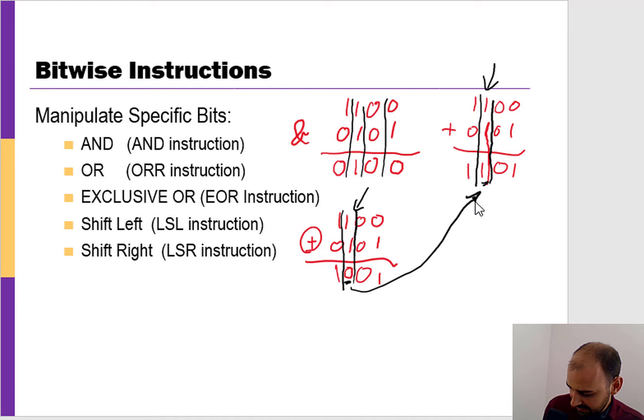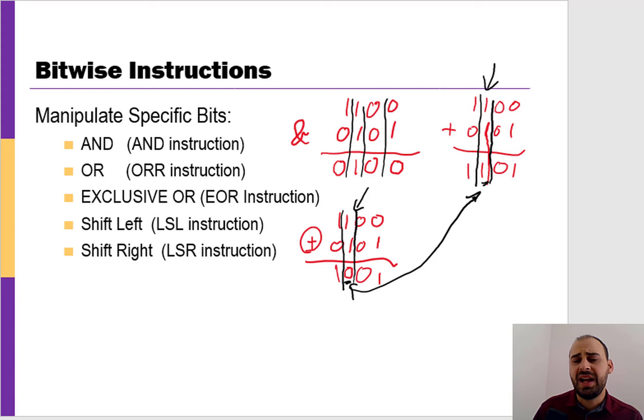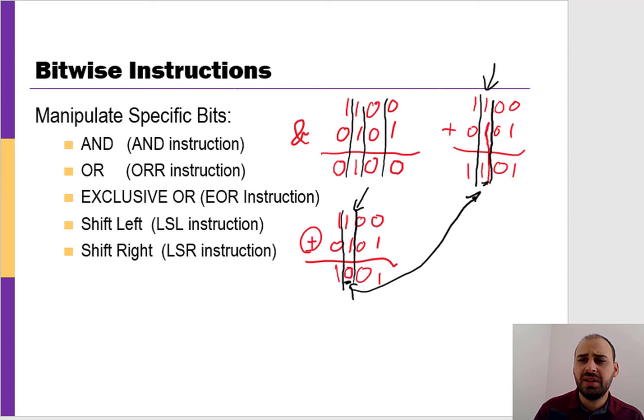So we have those bitwise operations and they're quite useful. We'll do examples throughout class — I'll introduce topics through video and then reinforce with real examples in context. One example we'll follow up on is building a mini assembler, where these operations are extremely useful — we need to do a ton of bitwise operations to make that happen.